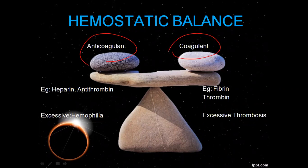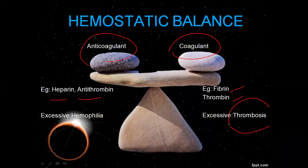If we talk about anticoagulants like heparin and antithrombin, and coagulants like fibrin and thrombin — if we have more coagulants, we can have excessive thrombosis and clotting. And if we have more anticoagulants, we can have hemophilia, which means we have no blood clot. Overall, we have hemostatic balance.